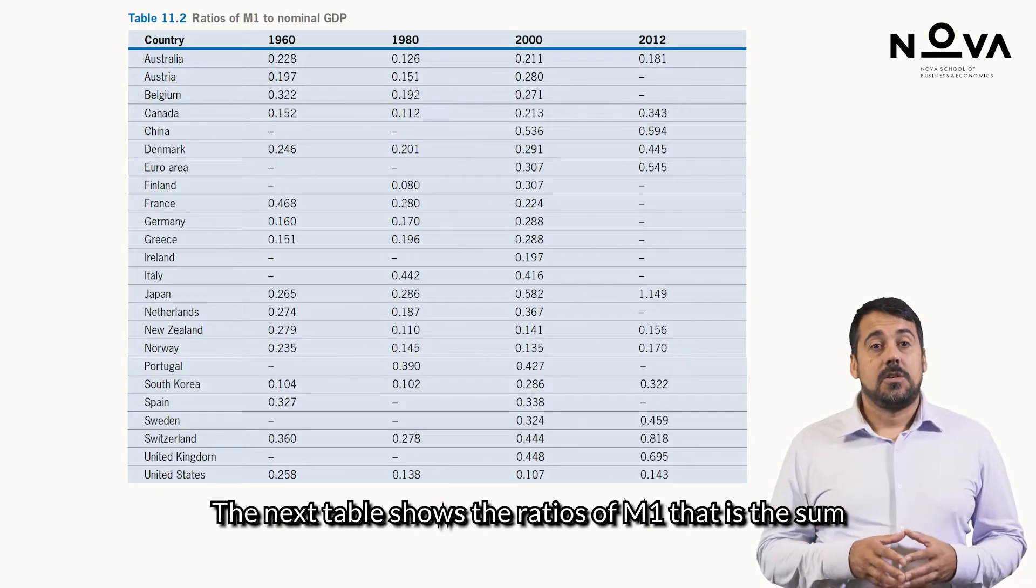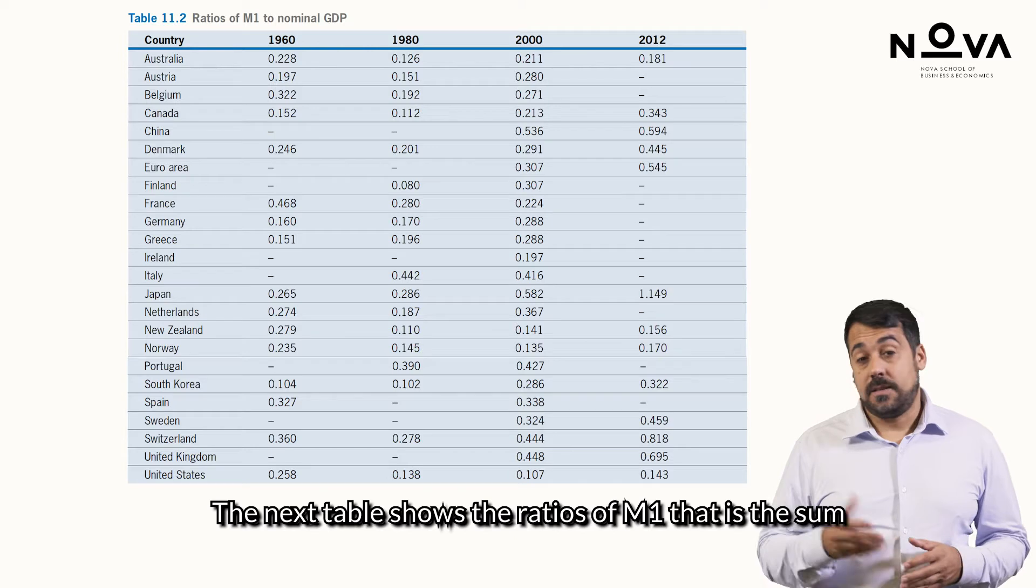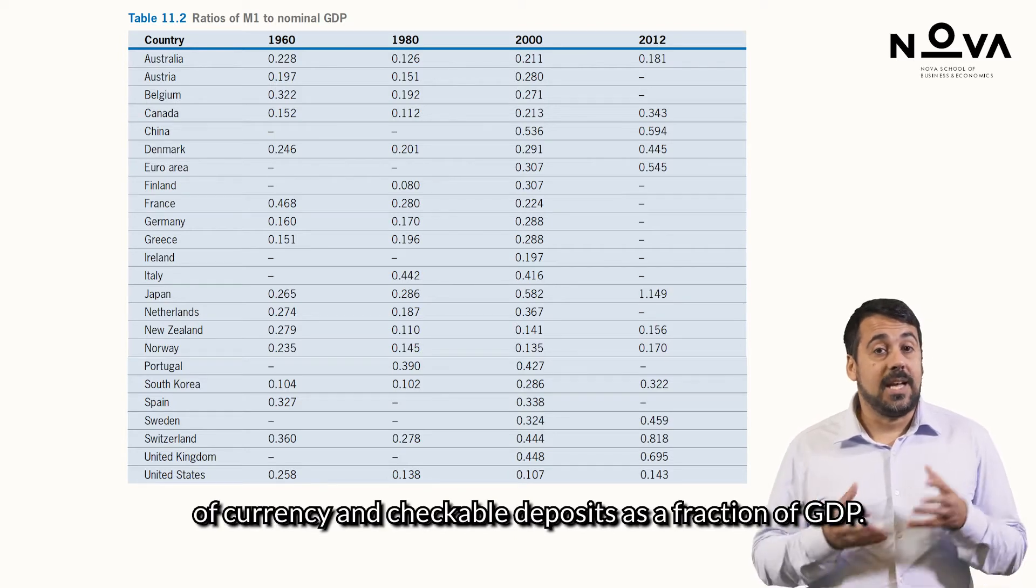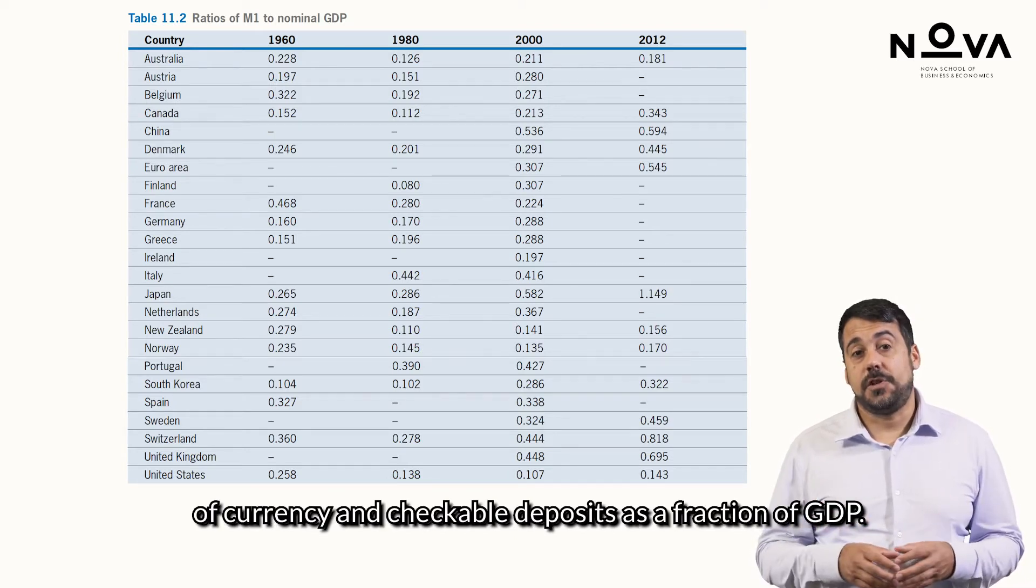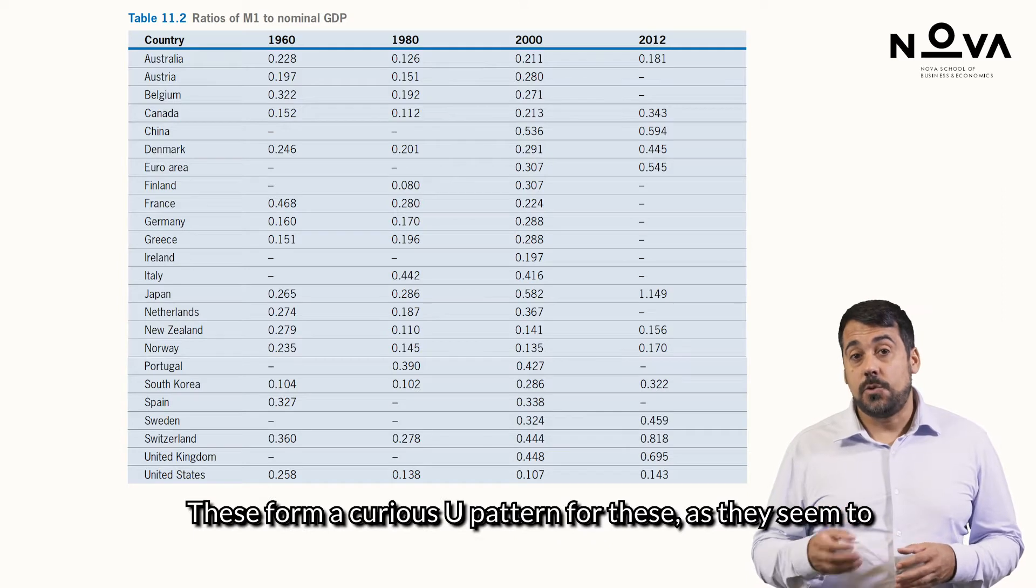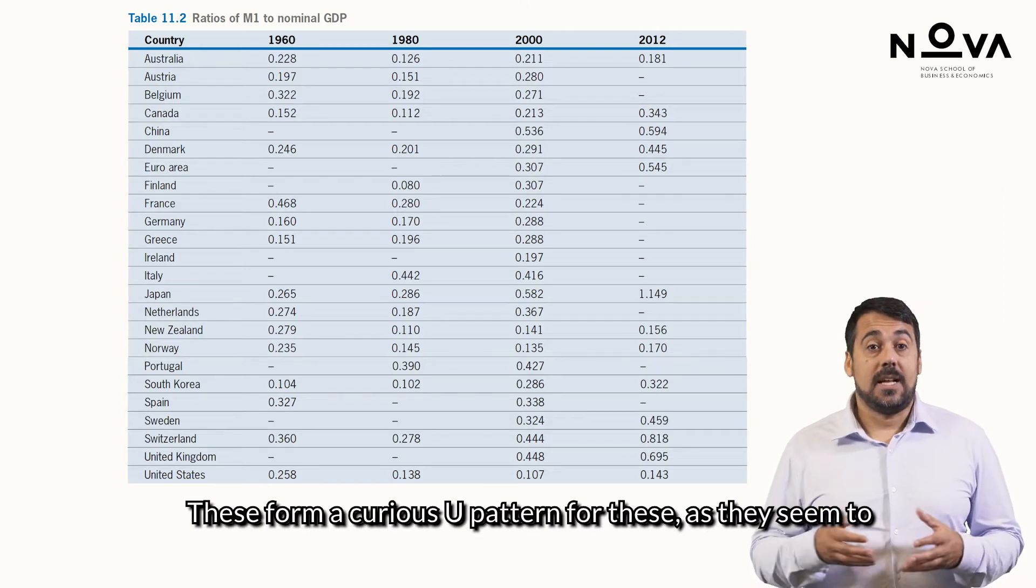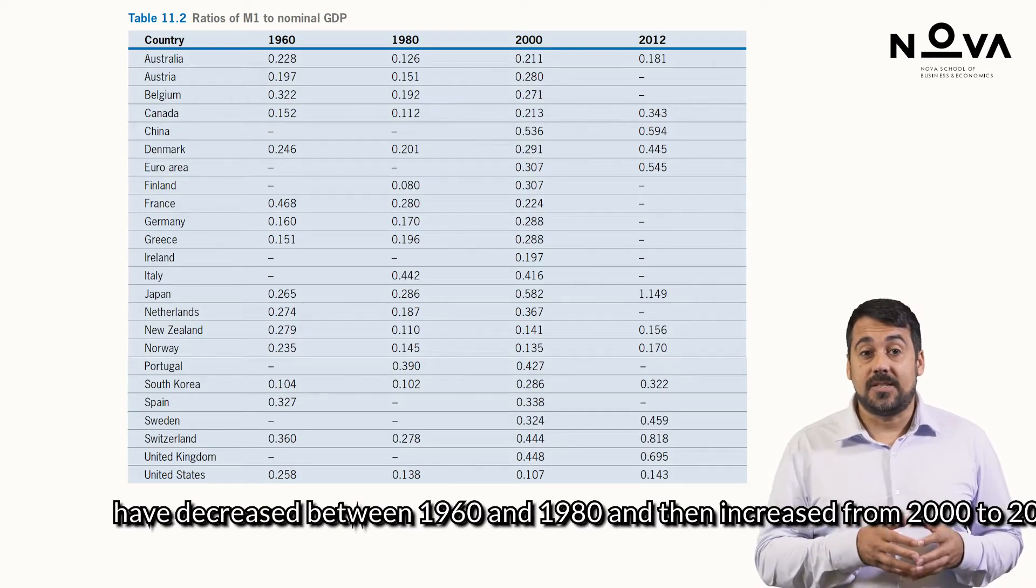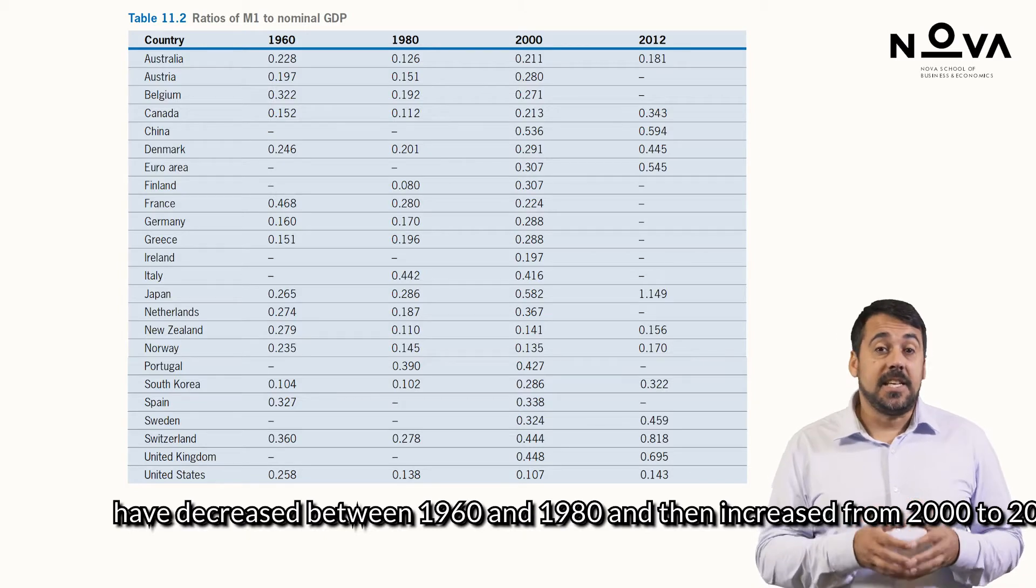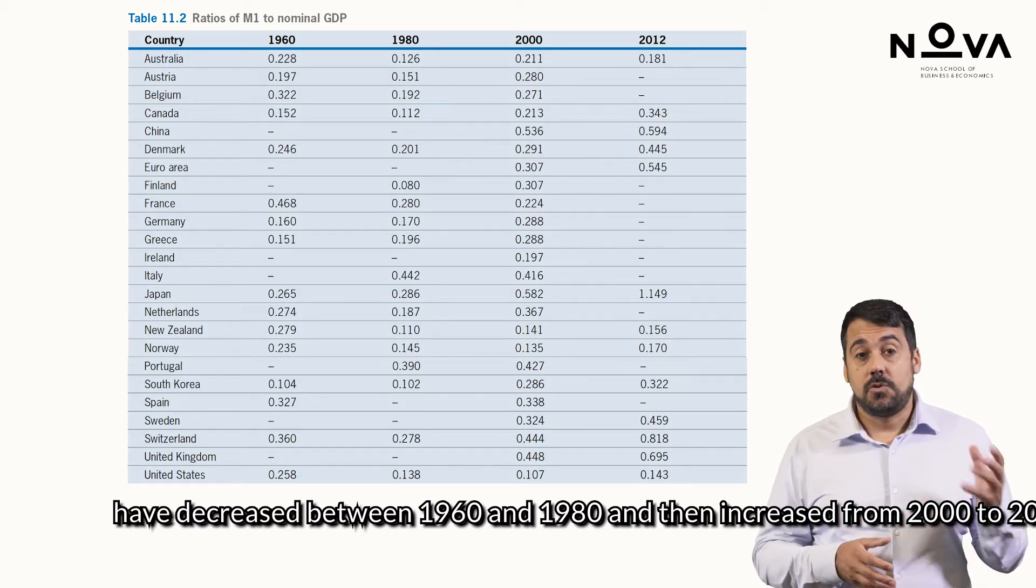The next table shows the ratios of M1, that is, the sum of currency and checkable deposits as a fraction of GDP. These form a curious U-pattern, as they seem to have decreased between 1960 and 1980, and then increased for 2000 to 2012.